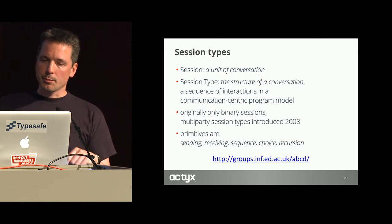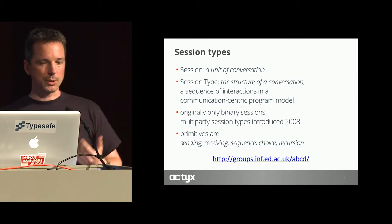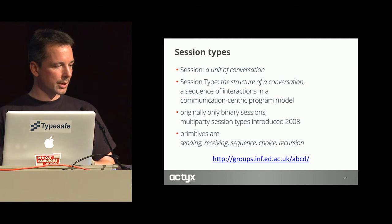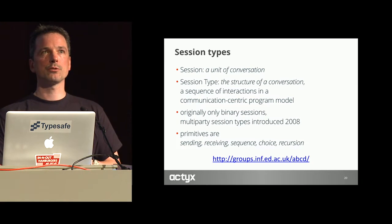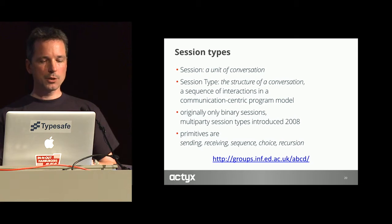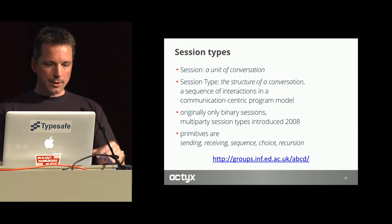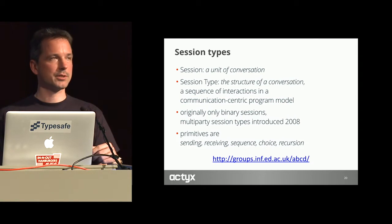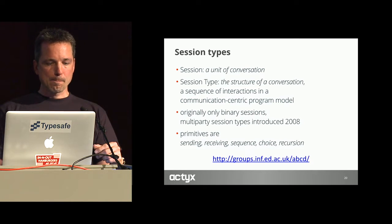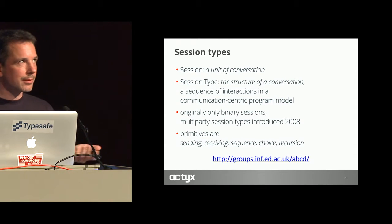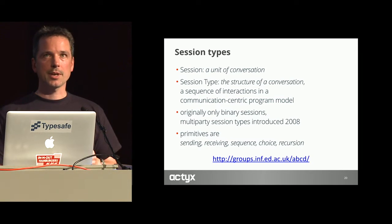Session types describe communications and are the tools we're looking into to formalize what all this means. A session type describes the structure of a communication — a sequence of interactions between processes in a model that entirely focuses on communication only. Whatever the parties do internally to decide which value to send is completely irrelevant; we can use the tools from functional programming to compose a response. Originally there were only binary session protocols with two participants, but since 2008 we have multi-party session types. The primitives — sending, receiving, sequence, choice, and recursion — are basically the same things the pi calculus has.